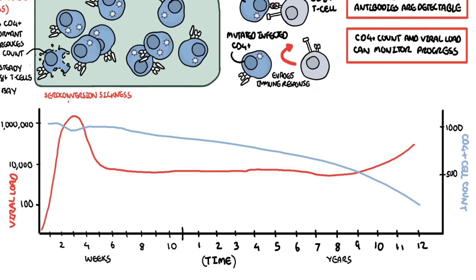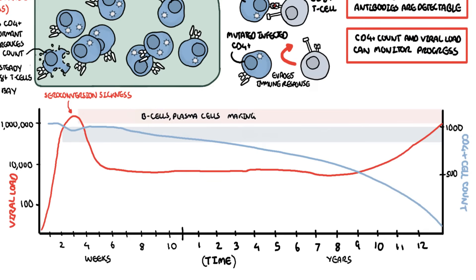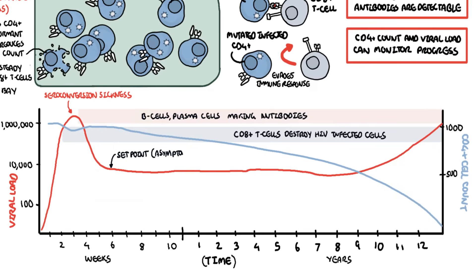Here, at seroconversion illness, the body begins producing antibodies — B cells and plasma cells begin producing antibodies by weeks 2 to 4 of the initial infection. The CD8 T cells are created to destroy the HIV-infected cells. HIV levels begin to fall in the blood because of this, and after a few weeks to months, the viral load and CD4 levels will stabilize at a level known as the set point.